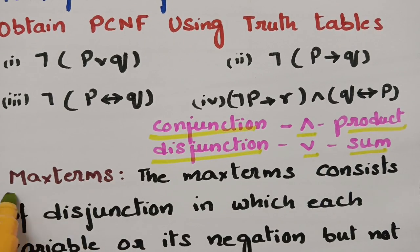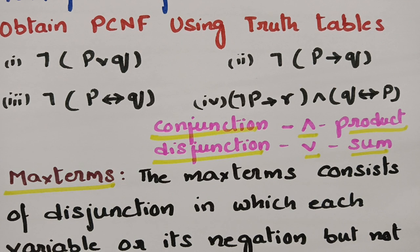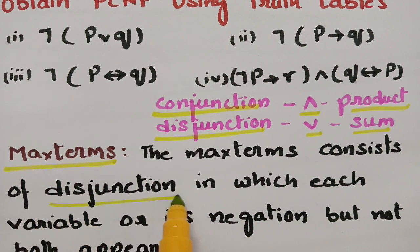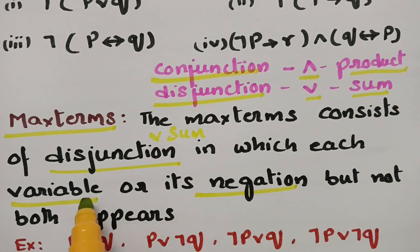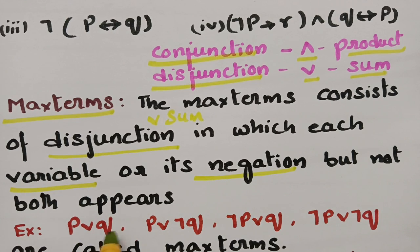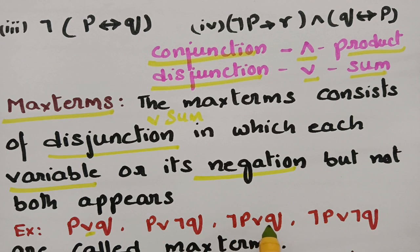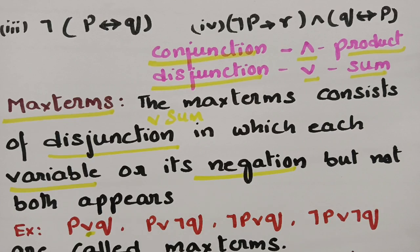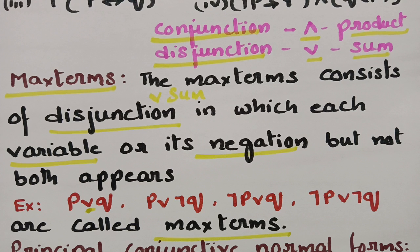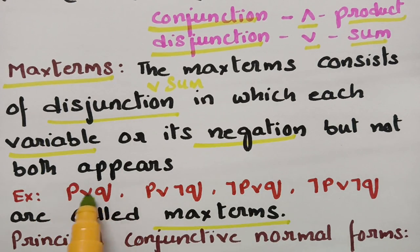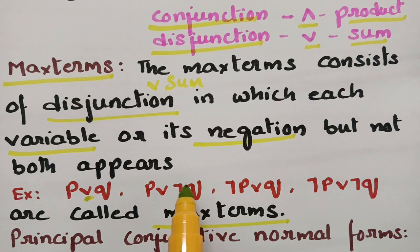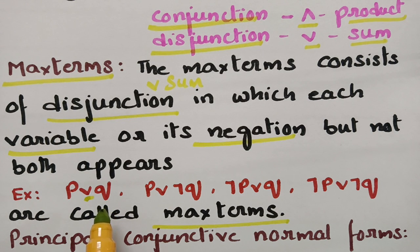Now I am going to teach you about max terms and how they are related to PCNF. Max terms consist of a disjunction — that is, a sum — in which each variable or its negation, but not both, appears. If you take two propositions P and Q connected with the disjunction symbol, the combinations are: P∨Q, P∨¬Q, ¬P∨Q, and ¬P∨¬Q. These terms are called max terms.